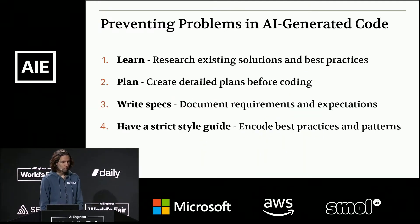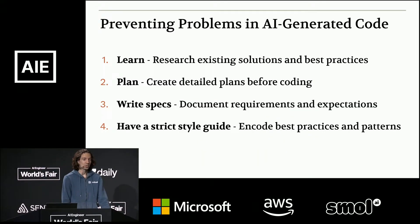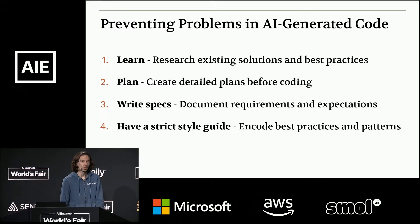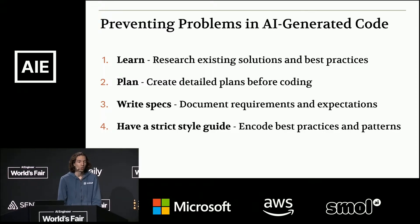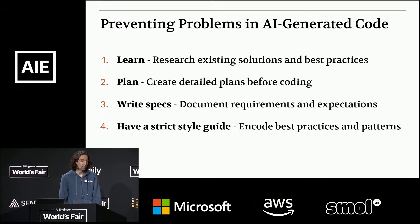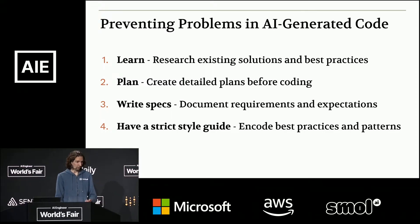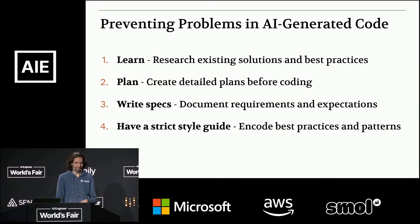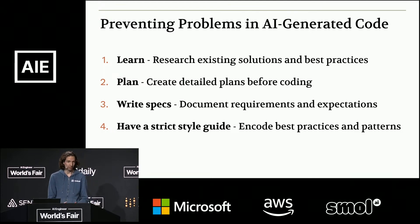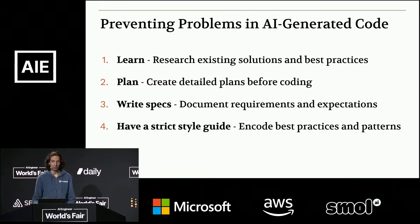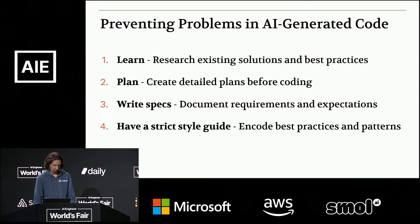So what are some ways to prevent problems in AI-generated code? We're going to go through four different ways: learning, planning, writing specs, and having a really strict style guide. We'll see how those manifest in Sculptor.